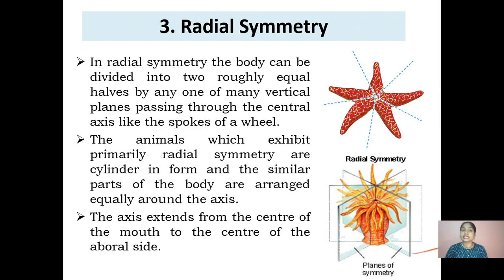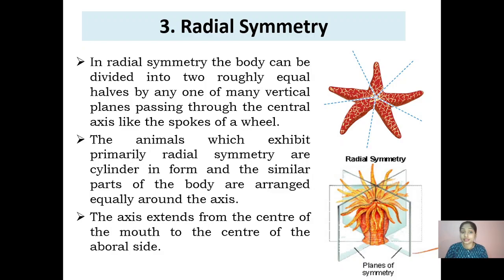The third type is radial symmetry. Since the concept of symmetry is approximate, in radial symmetry the body can be divided into two roughly equal halves by any one of the many vertical planes passing through the central axis, like the spokes of a wheel.